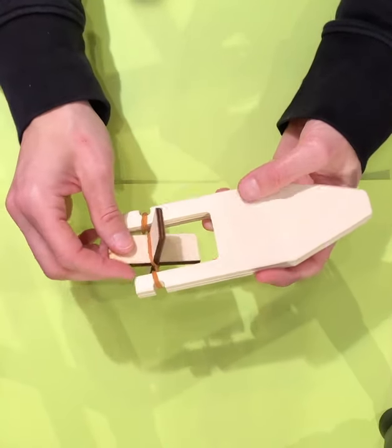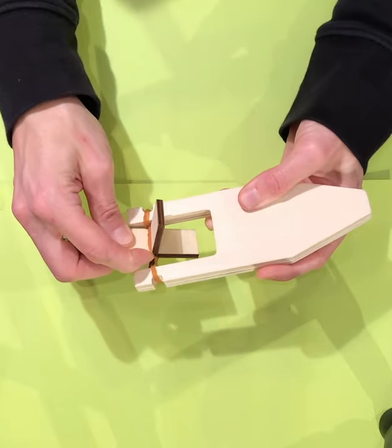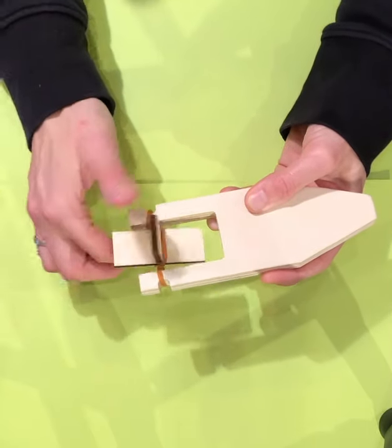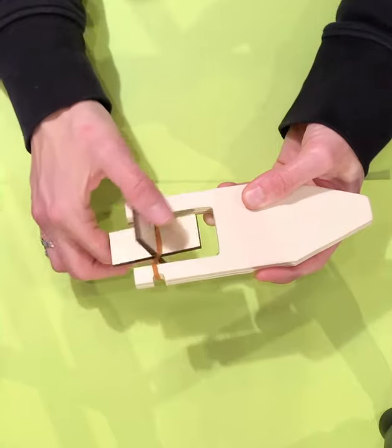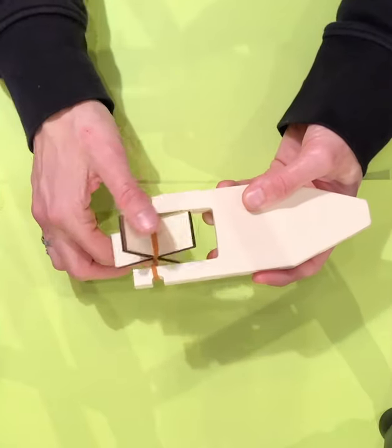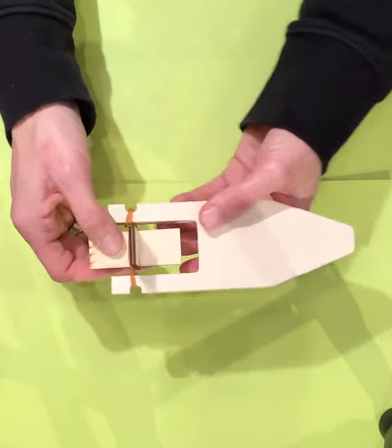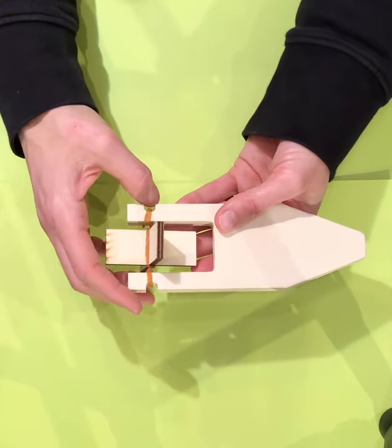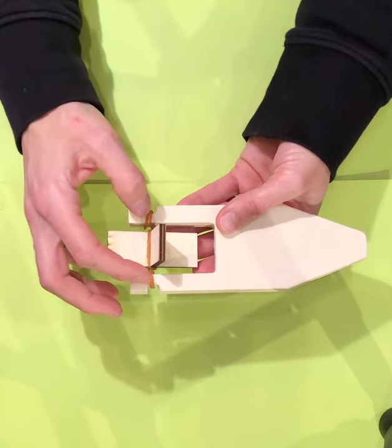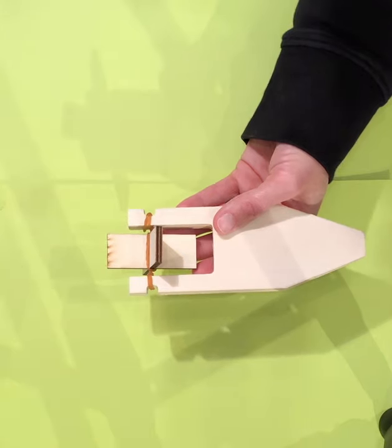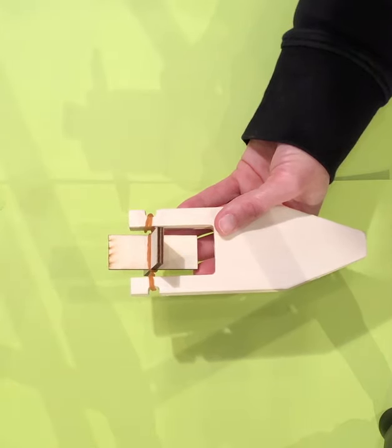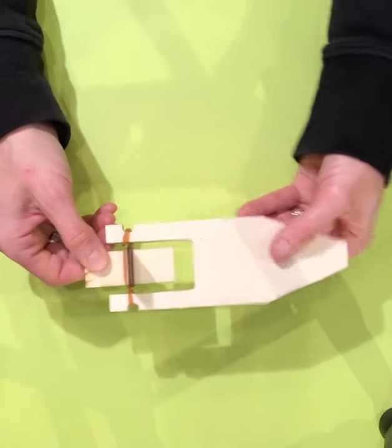Now, how this works is while you're twisting it, you're creating a source of energy in the rubber band. Then when you put it in the water, it will release the energy when you let go of the paddle. It'll unwind, releasing all that energy, and this paddle is going to push water out of the way.